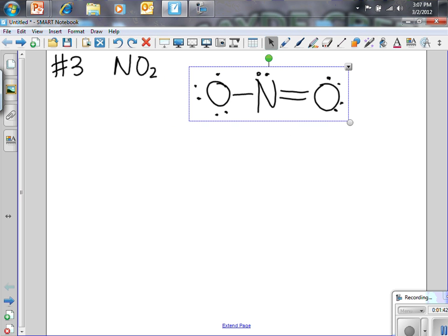And this is how we can draw the Lewis structure for nitrogen dioxide, but it's not the only acceptable way to draw it. In fact, we have to draw the resonance structures for this one. So this is one way.